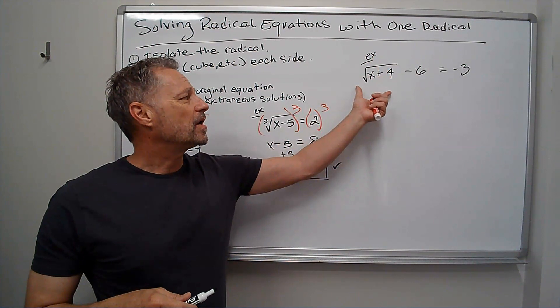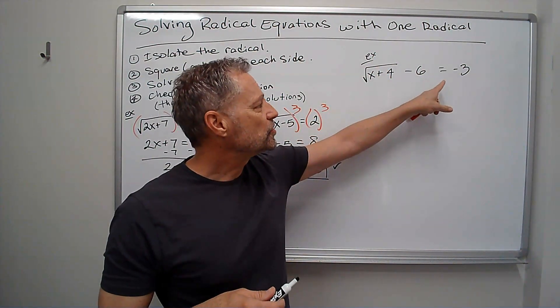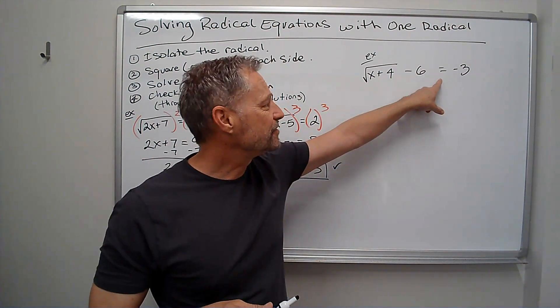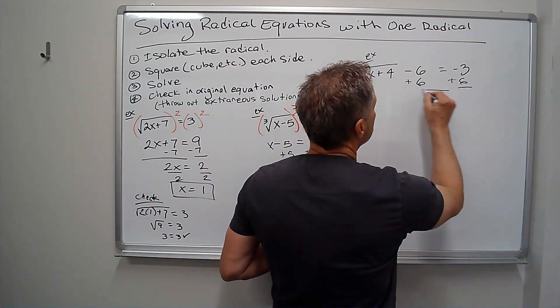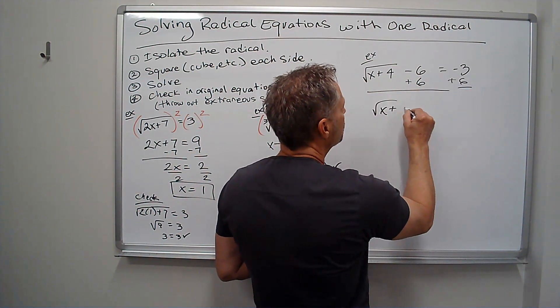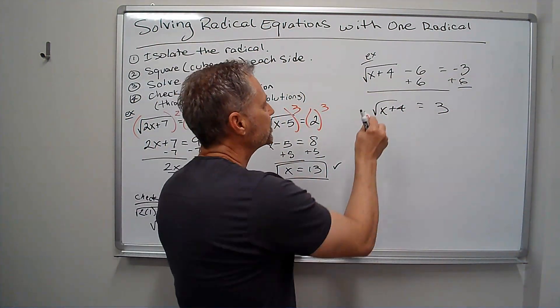And then the last one right up here. This time, I wanted to show you one where the square root wasn't all by itself. So notice this time it's a negative on that side. But once I add the 6 to isolate the radical, I get the square root of x plus 4 equals 3. And then I go about what I did before. I'm going to square both sides.